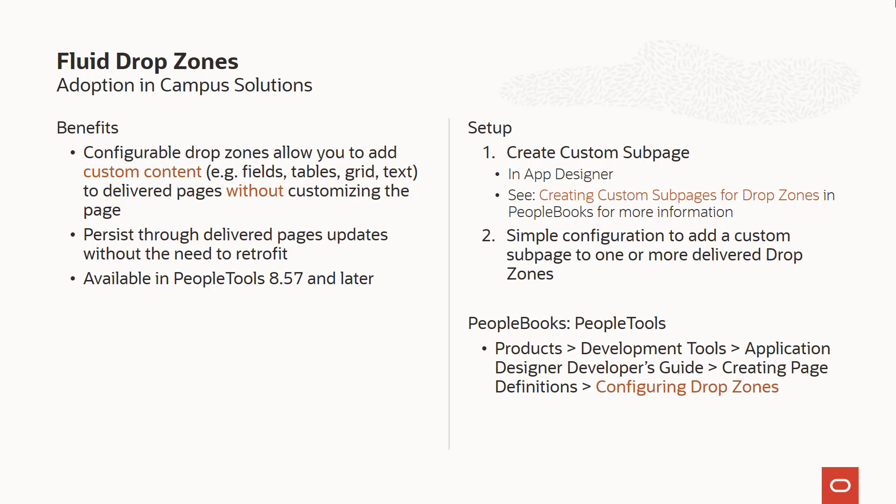The first step to set up drop zones is to define the custom subpages you want to add. This is done in App Designer. You can include fields, tables, grids, or instruction text on your subpage as required. Once you have defined your custom subpages, they can be added to one or more drop zones via a simple configuration component. For more information on creating custom subpages, please refer to configuring drop zones in the PeopleTools PeopleBooks.